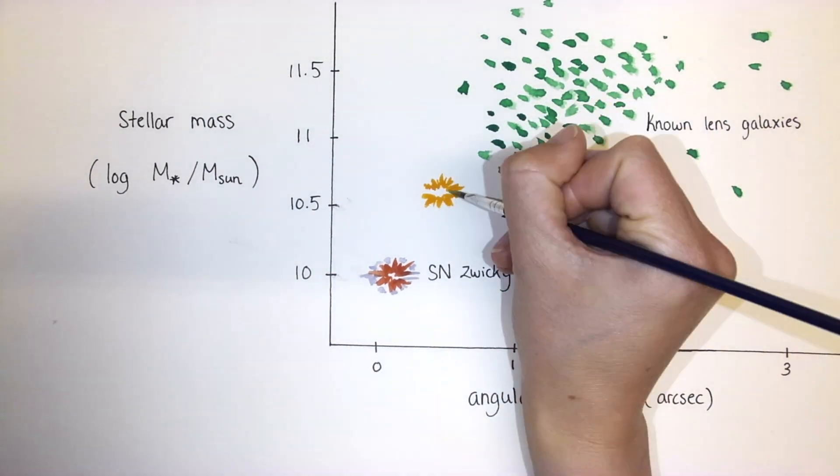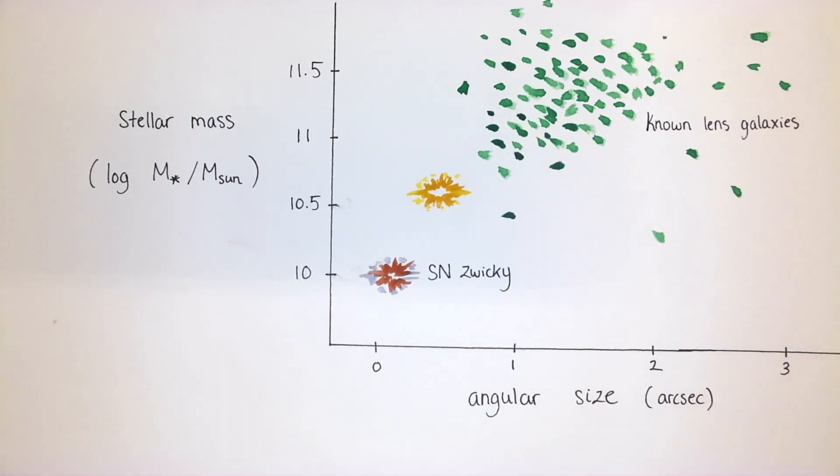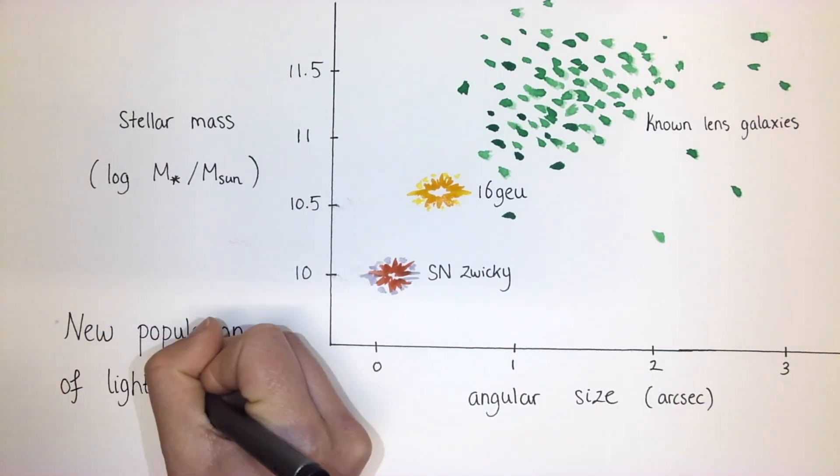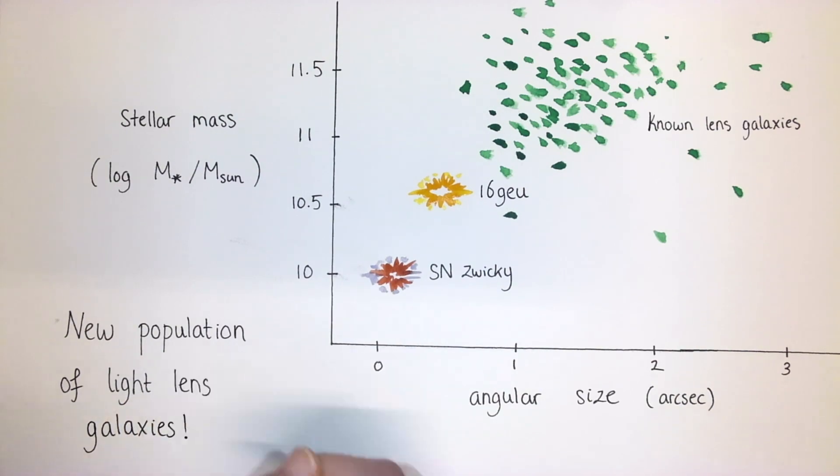There's one other known supernova lens by a single galaxy, 16 Geu. And when we add 16 Geu to the diagram, we see that these lensed standard candles allow us to uncover a new population of light and small lens galaxies.